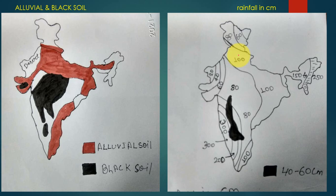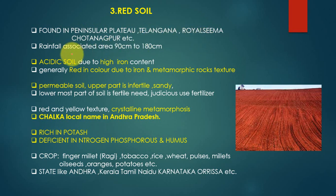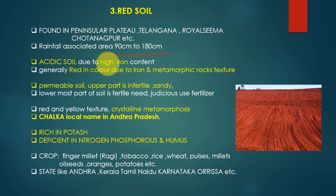Next is red soil. Red soil is found mostly in the Peninsular plateau — Telangana, Rayalaseema, and Sultanpur. Rainfall associated with this area is 90 to 180 centimeters. This soil is acidic due to high iron content. It is generally red in color due to iron and metamorphic rock texture.